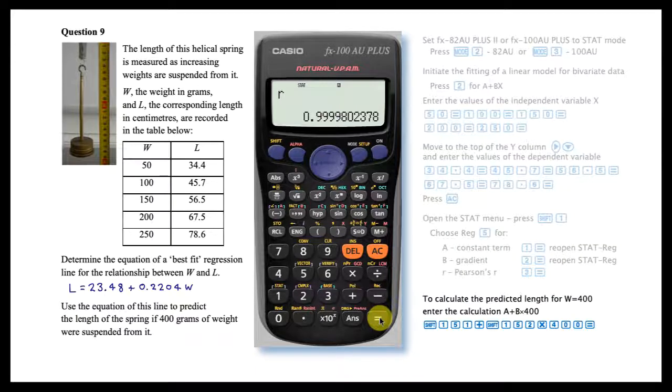To complete a calculation involving this regression model, these values can be recalled. In this case we wish to predict the length of the spring when the weight is 400 grams. This can be done directly by calculating a plus b times 400.